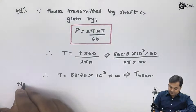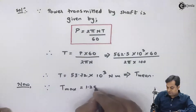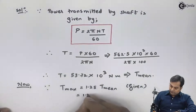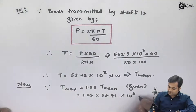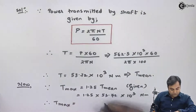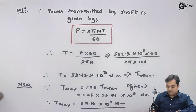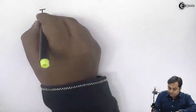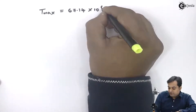Here we have the relation that maximum torque is 1.25 times mean torque. So T_max = 1.25 × 53.72 × 10³ newton meter, giving T_max as 67.14 × 10³ newton meter. Now I will convert this into newton mm by multiplying by 1000, so T_max is 67.14 × 10⁶ newton mm.